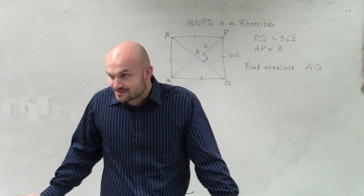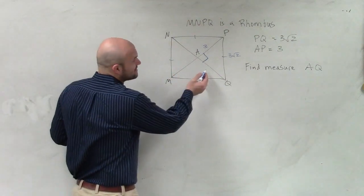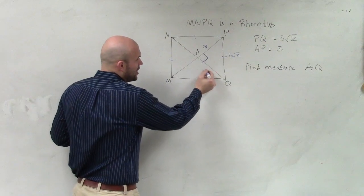Pythagorean theorem. We just did this. You're trying to find AQ. We don't know AQ.